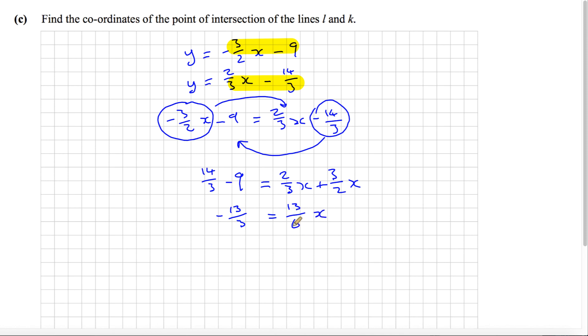We want to find x, so we could divide both sides by 13 over 6. What we could do here is multiply both sides by 6.